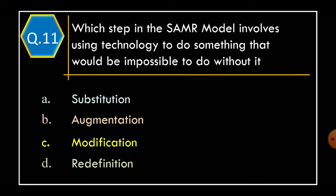Question 11: Which step in the SAMR model involves using technology to do something that would be impossible to do without it? Option A: Substitution. Option B: Augmentation. Option C: Modification. Option D: Redefinition. And the correct option is Option D: Redefinition.